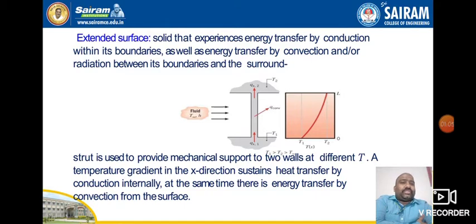Here, one strut is used to provide mechanical support between two walls at different temperatures. The temperature gradient in the x-direction sustains heat transfer by conduction internally. At the same time, there is energy transfer by convection from the surfaces.